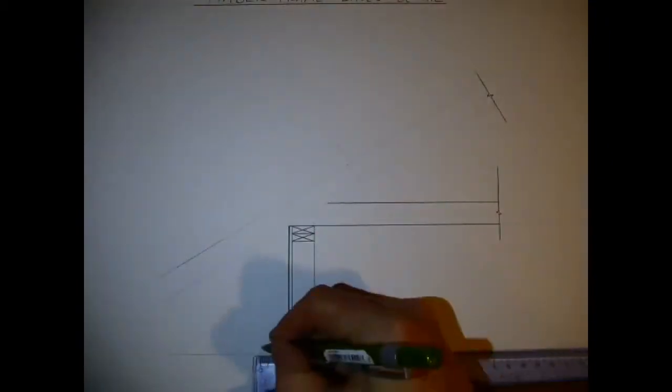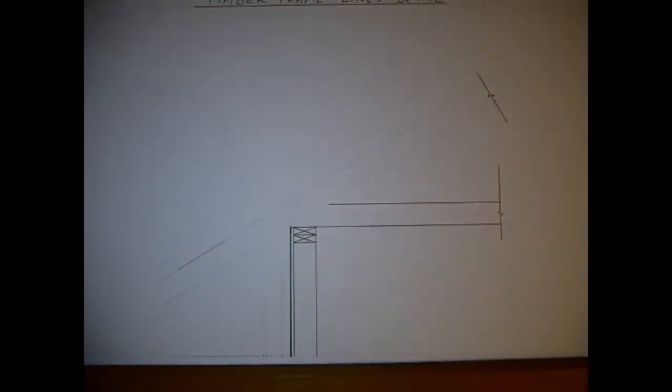Then I'm going to draw the block wall which is on the outside with the 50 cavity, and then I'm going to use 30 degrees for the pitch of the roof. Whatever they tell you in the exam to use, that's what I would go with.